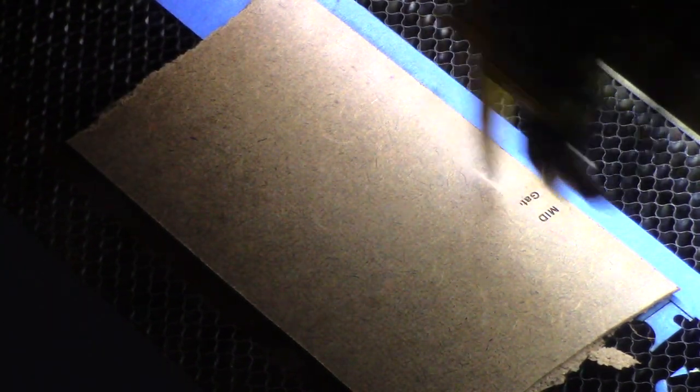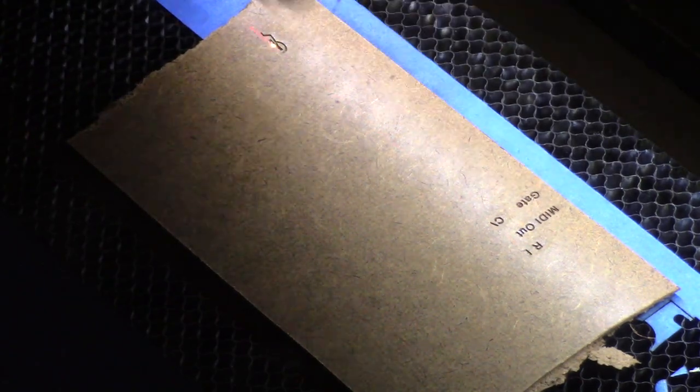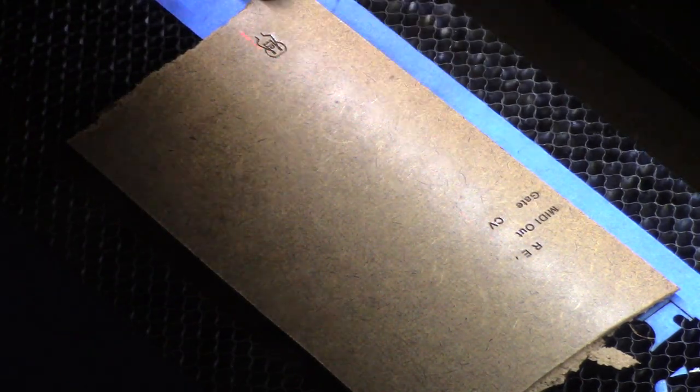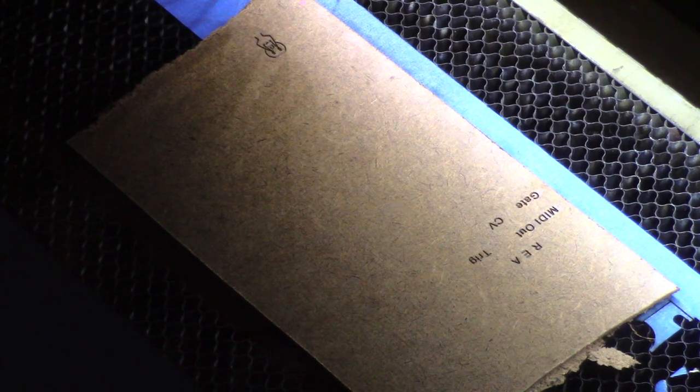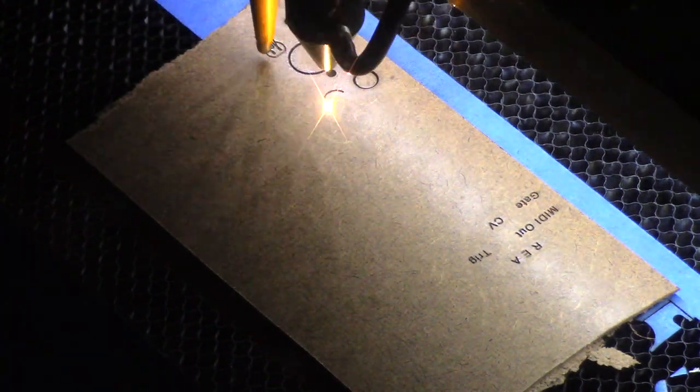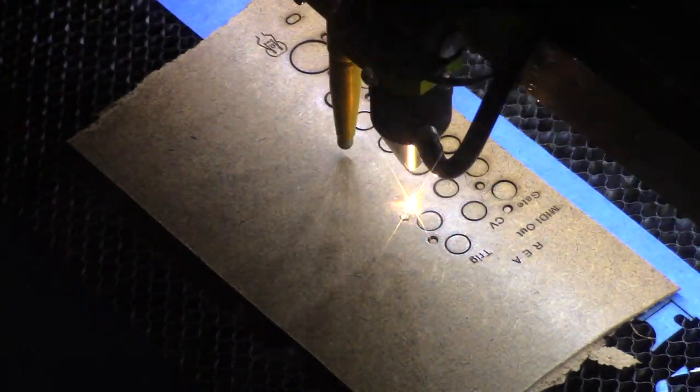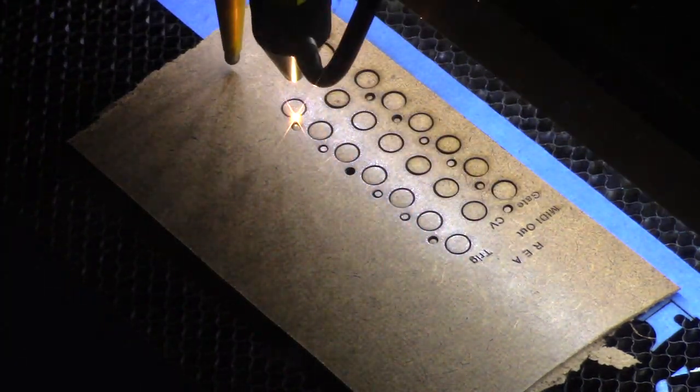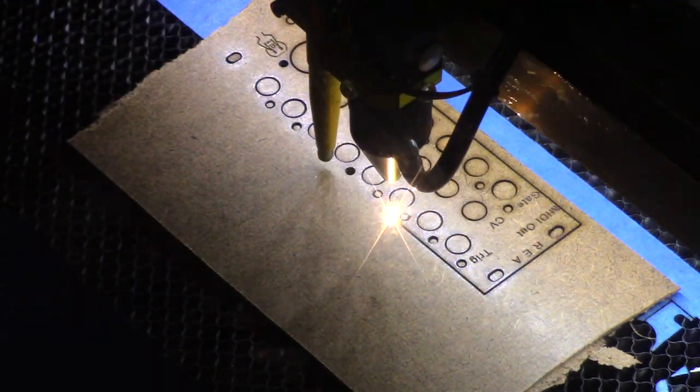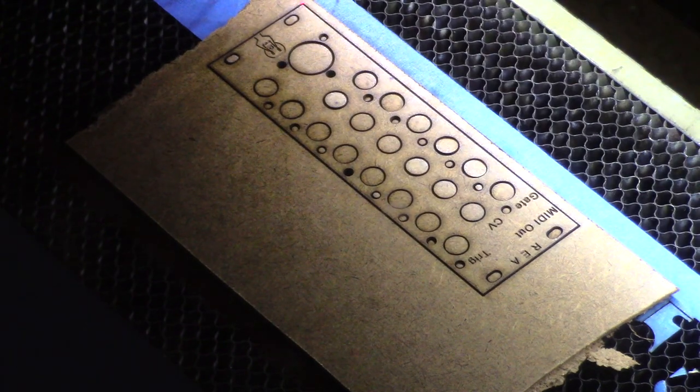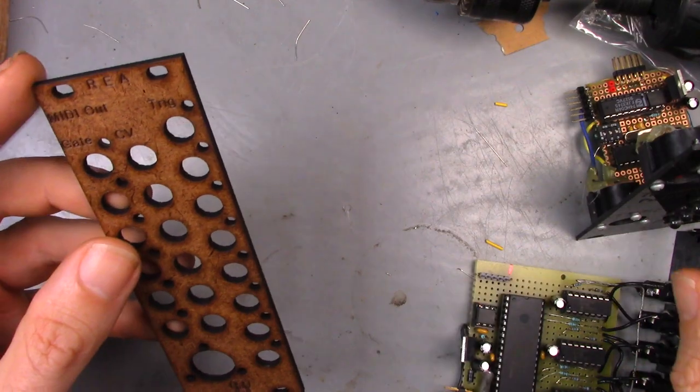Then it was off to the laser to cut a new faceplate that features both trigger outputs and jacks for CV and gate outputs on a single unit. And there we are, a fresh faceplate that smells just a little bit of forest fire.